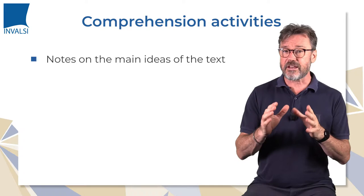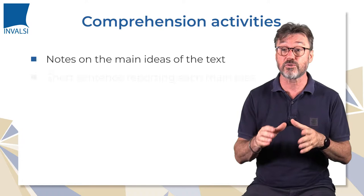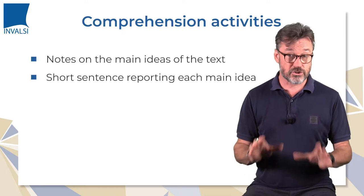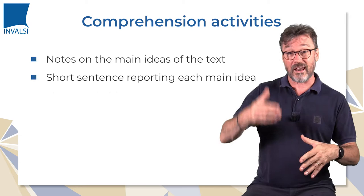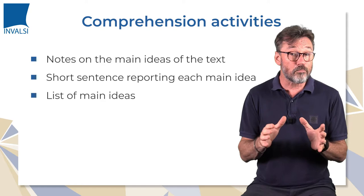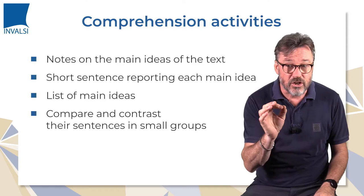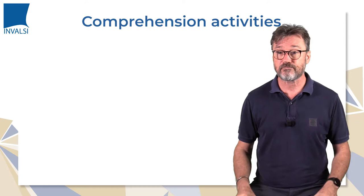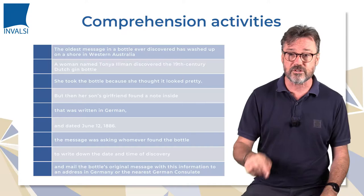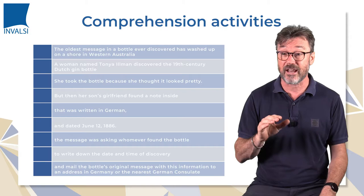Instead of having the students underline parts of the text, we're going to ask them to produce a short sentence reporting each main idea. Students are allowed to write the same words as the text. We end up with a list of main ideas. We then ask the students to compare and contrast their sentences in small groups and to reach agreement on the most important ideas. Finally, we can have the students reword the sentences. You can pause the video and use the links below to download the text and the comprehension activities just explained, with an answer key.